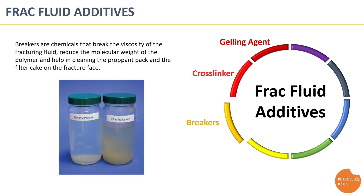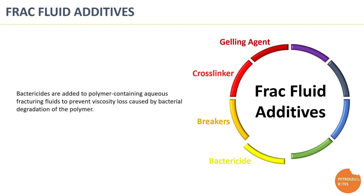Breakers are chemicals that literally break the viscosity of the fracturing fluid by reducing the molecular weight of the polymer. There are two main types of breakers: oxidizers and enzymes. The breaking action is triggered by temperature and time, and both are related to the amount of breaker used. Since the gelling agent polymer is a perfect meal for bacteria, bactericides are added to prevent viscosity loss caused by bacterial degradation of the polymer.